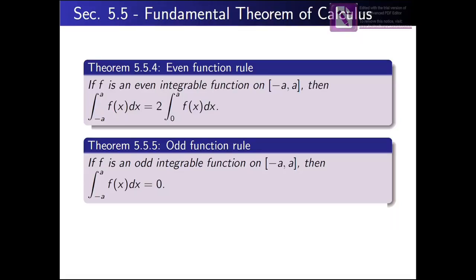Theorem 554: Even Function Rule. If f is an even integrable function on the closed interval minus a to a, then the integral of f(x) from minus a to a is given by 2 times the integral of f(x) from 0 to a. So if your function is even and you want to evaluate the integral from minus a to a, you can write it as 2 times the integral from 0 to a.